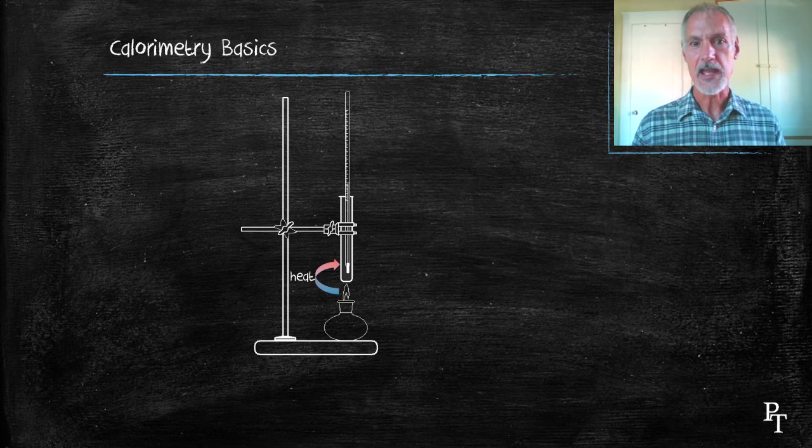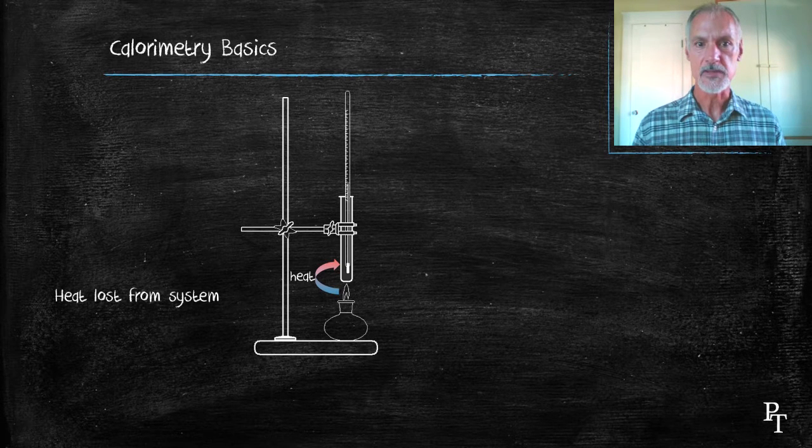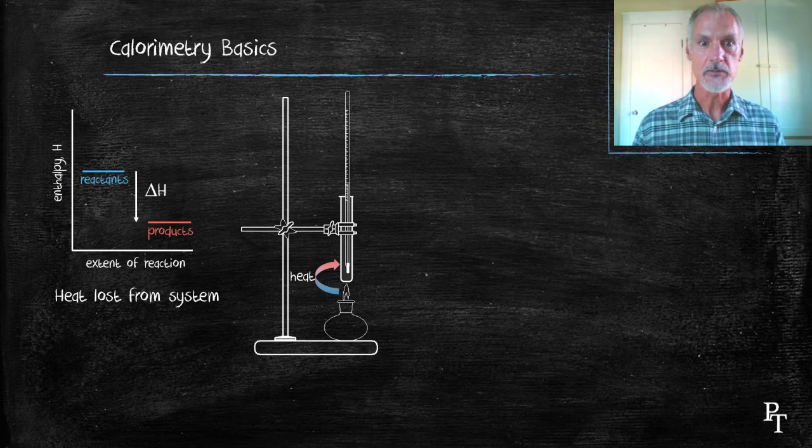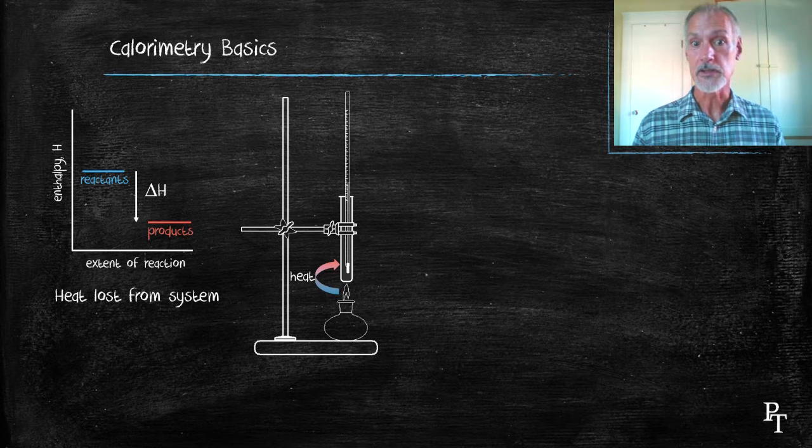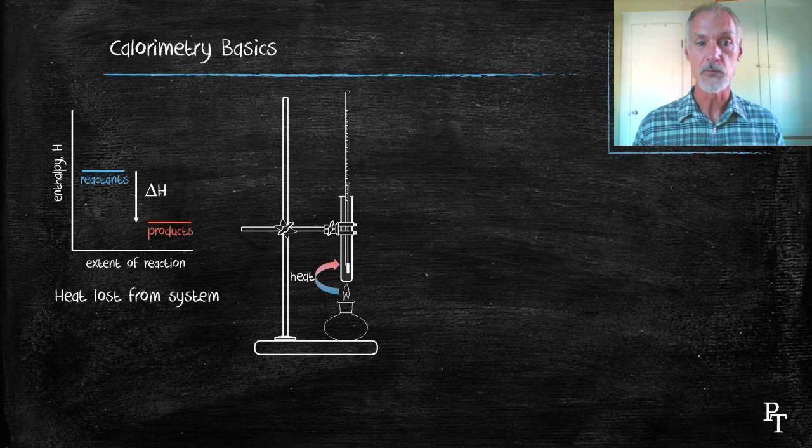In this case, our reacting system is the alcohol burner, and the heat lost from that burner will result in a change in its enthalpy. This is an exothermic reaction, so delta H here would be negative. Delta H also measures the molar enthalpy change, the heat from burning one mole of our fuel.